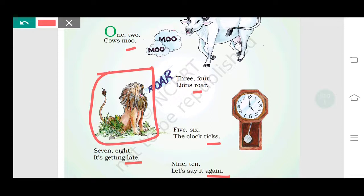Seven eight, it's getting late. It's getting late means when you are late, like I am late, you are late. When we need to get home and we are late, we say I am late. So that is seven eight, it's getting late.